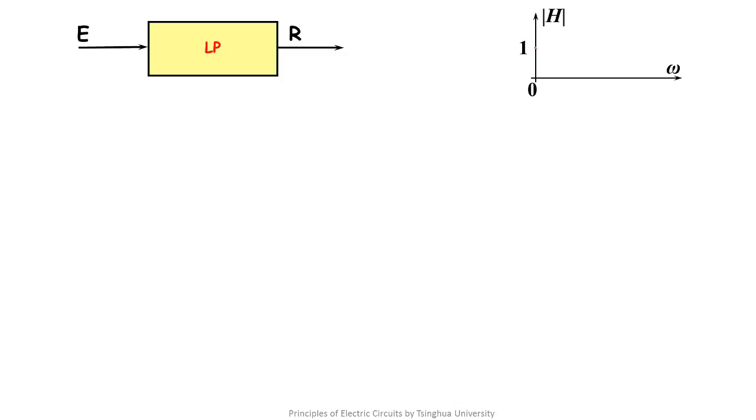For a low-pass filter, as the name suggests, it should make the low-frequency signal pass and high-frequency signal be attenuated. So the AF characteristic of the ideal low-pass filter should be like this. The frequency can be specified by the designer. We call it cut-off frequency.